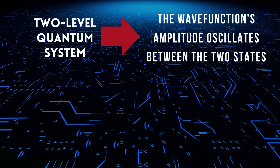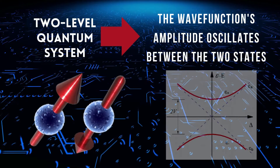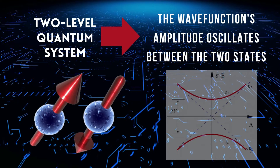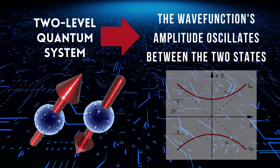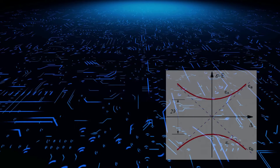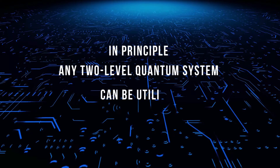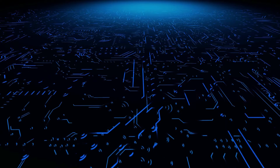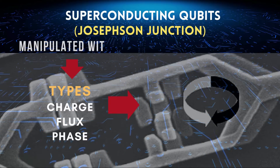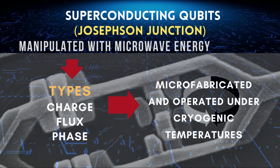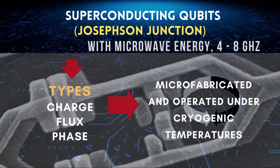Qubits can be realized in a variety of physical systems, including nuclear spins, electron spins, and photons. In order to perform calculations, qubits must be controlled and measured using specialized quantum hardware and techniques.